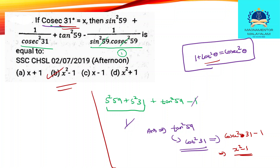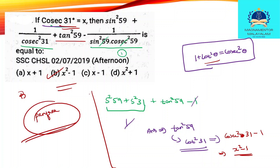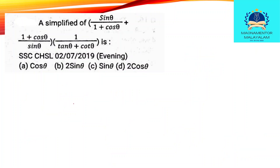Then sin squared over 30. Here we go — 1 minus 1 equals 0. Tan squared 59. Then cosine equals 1. Then cosine theta minus 1. Then cosine squared equals x squared minus 1. After the sine squared is 6, we teach this identity.